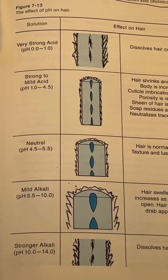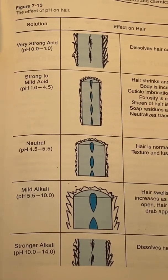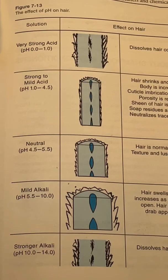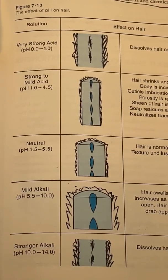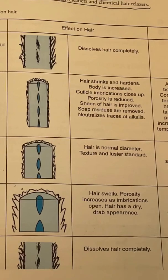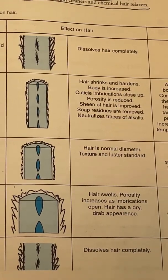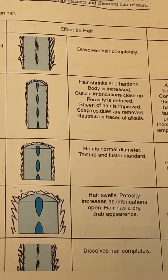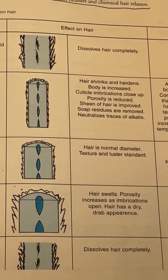Acid solutions below pH 7.0 shrink, constrict, and harden the cuticle scales of the hair shaft. An alkaline solution above pH 7.0 softens, swells, and expands the cuticle scale.